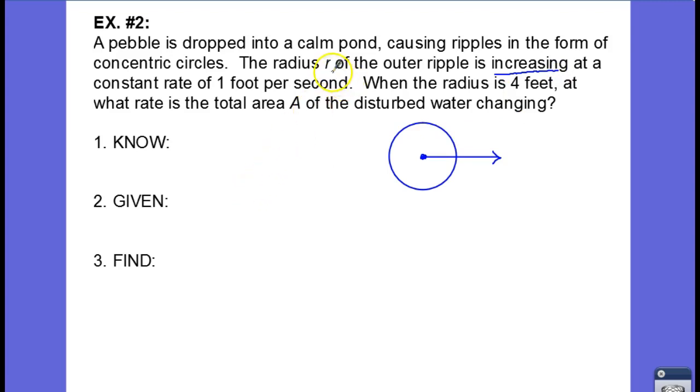So the radius r is going to be increasing at a constant rate of one foot per second. When the radius is four feet, at what rate is the total area of the disturbed water changing? So we're looking at a change in area.